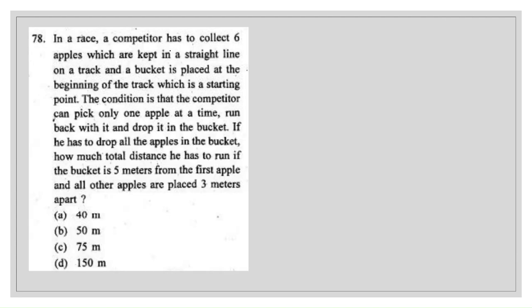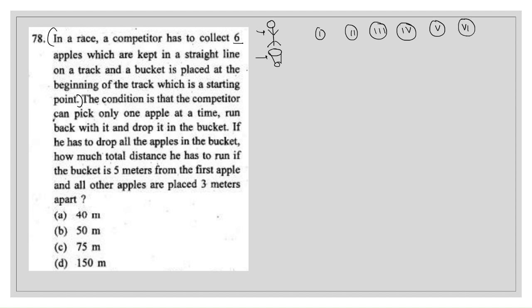Next question: in a race, a competitor has to collect 6 apples kept in a straight line on a track, and a bucket is placed at the beginning of the track as the starting point. Suppose the competitor and the basket are both at the beginning. We draw 6 apples on the track: apple 1, 2, 3, 4, 5, and 6, kept in a straight line, with the bucket at the starting point.